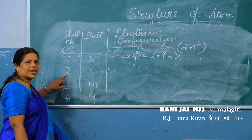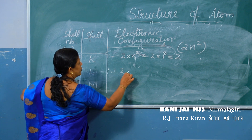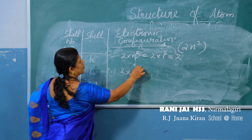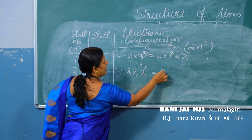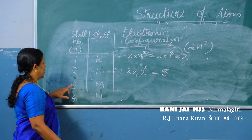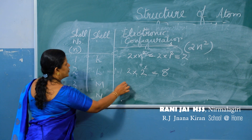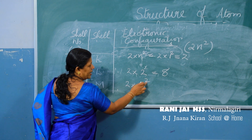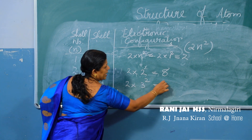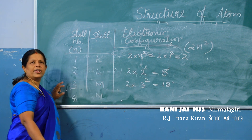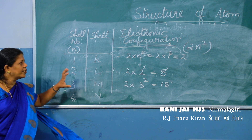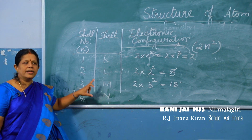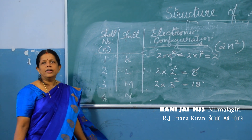For the third shell M: 2 × 3² = 18 electrons. Like this we can find the electronic configuration — the arrangement of electrons in shells around the nucleus.